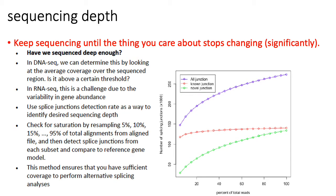One of the trickiest aspects of RNA sequencing experiments is deciding how deeply you need to sequence each individual sample. The take-home message is that no matter what you're trying to measure, you should keep sequencing until the thing you're trying to measure stops changing significantly.